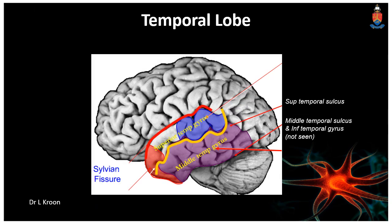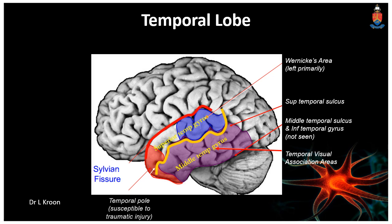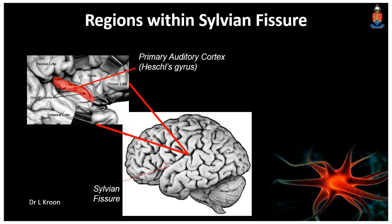Moving on to the temporal lobe: here on the superior posterior temporal gyrus, we have Wernicke's area. Here in the middle temporal gyrus, we have the temporal visual association areas. The inferior temporal gyrus cannot be seen, and here in red we have the inferior temporal pole, which is clinically important as it is most susceptible to traumatic injuries. Other regions in the temporal lobe visible within the Sylvian fissure include Heschl's gyrus, which is the primary auditory cortex, highlighted here in red.